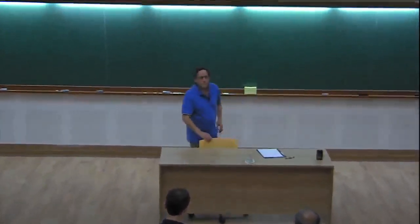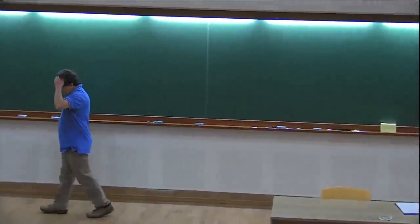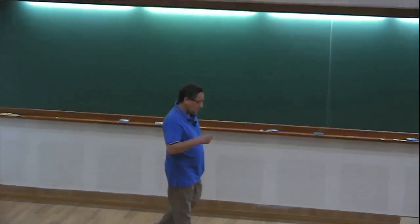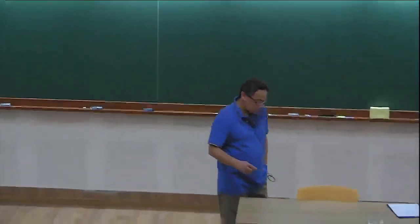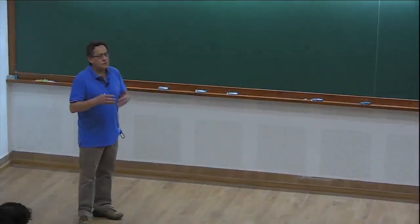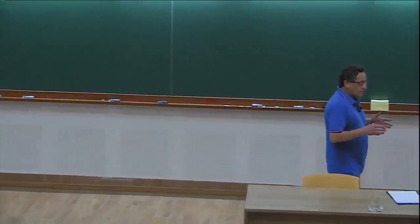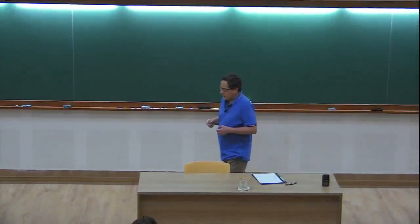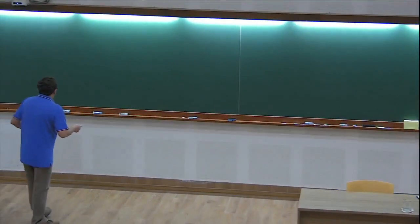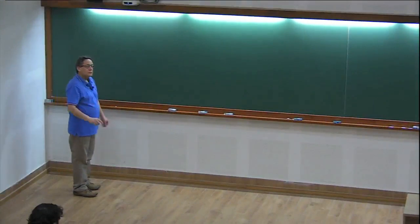Good morning everybody, welcome to the first lecture of the morning. Today I will speak about Schur's theorem and Rado's theorem. Rado was a student of Schur, and as Professor Adikari said, in Ramsey theory which was born in the 1930s, before that there were two Ramsey-type theorems: one by Hilbert in 1892 and one by Schur in 1916. The motivation of Schur was about Fermat's theorem.